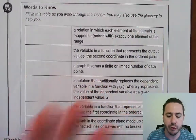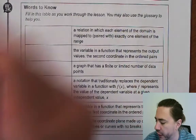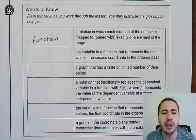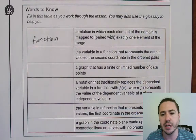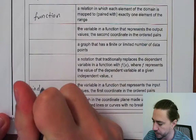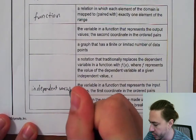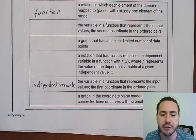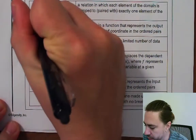A few vocabulary terms we're going to be using: one is what a function is, and we've defined that before, so I'm not going to spend too much time on it. It's just when you have a relationship where each input is paired with exactly one output. The input is called the independent variable — usually your x — and the variable that represents your output values is called the dependent variable.